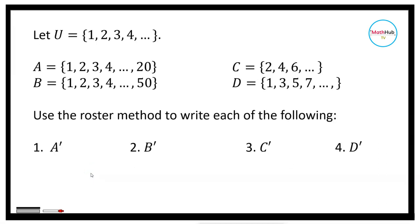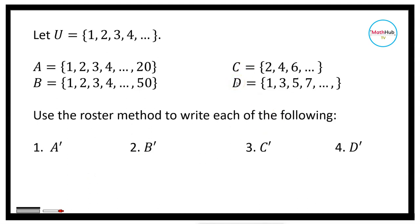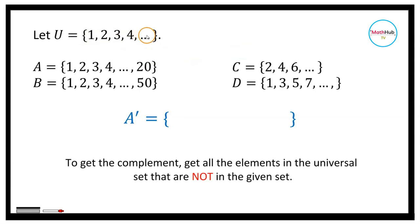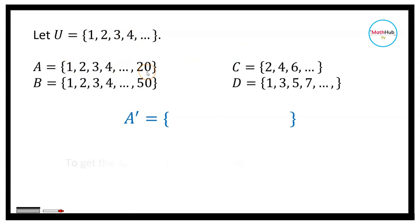In the following exercises, we are given the universal set and sets A, B, C, and D. We want to use the roster method to write each of the following sets. First, we have A prime, or the complement of A. For the complement of A, you write all the elements in the universal set that you can't find in A. If A goes up to 20, we start with 21, 22, 23, 24, and so on.